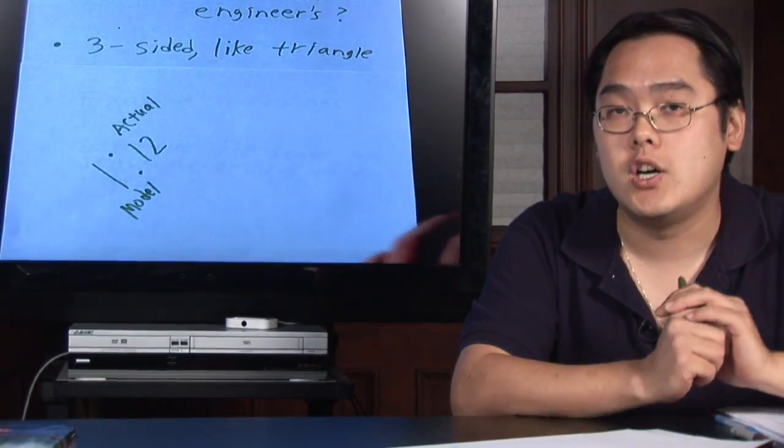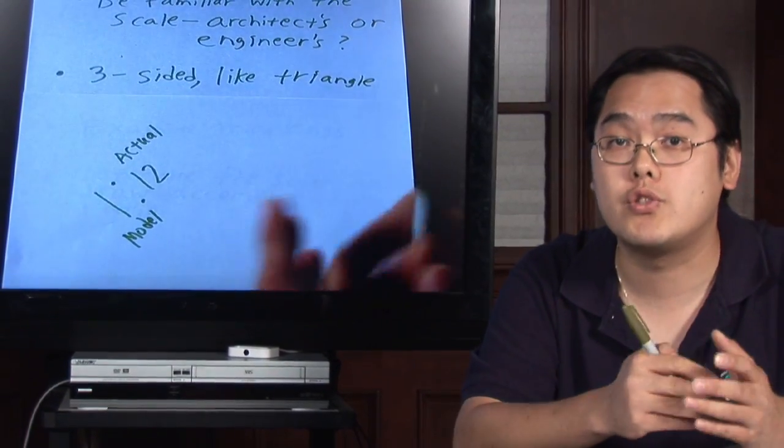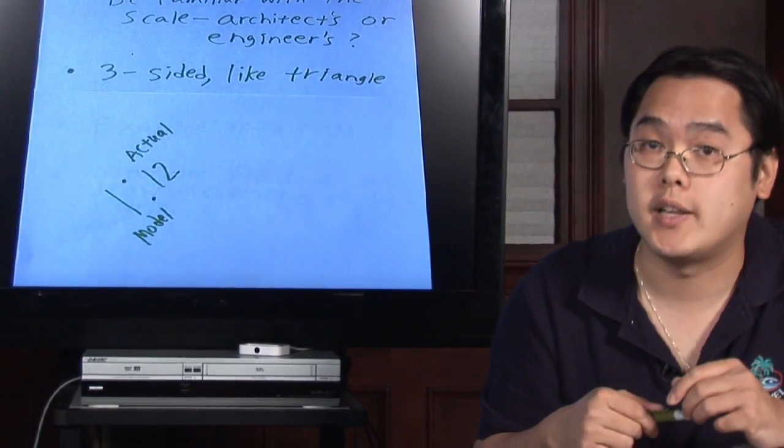Now, just as a friendly reminder, an architect's scale and an engineer's scale are three-sided. We're used to using rulers that are two-sided, but a scale is actually three-sided, kind of like a triangle.